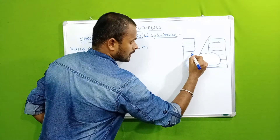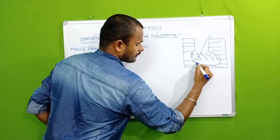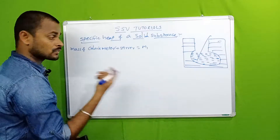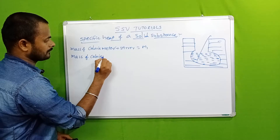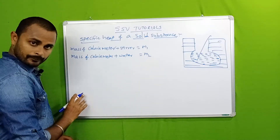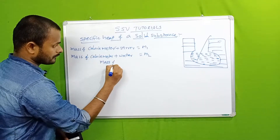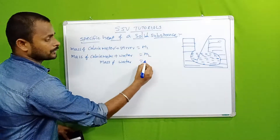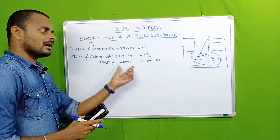Now, pour water into the calorimeter up to one-third of its capacity. After adding water, the mass changes. The mass of the calorimeter plus water is equal to M2. Therefore, the mass of water is M2 minus M1.